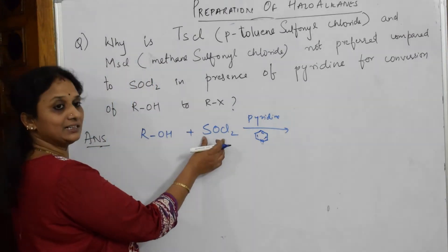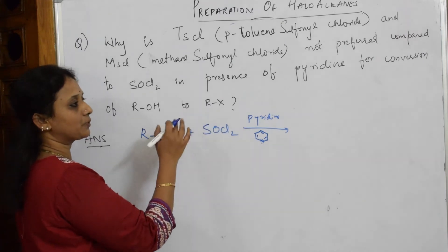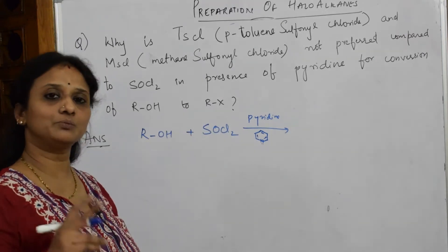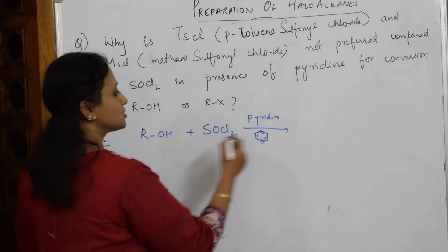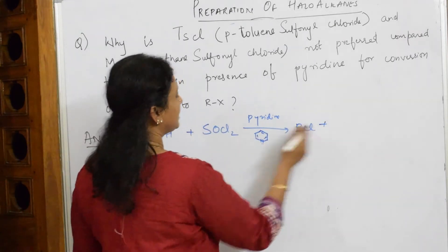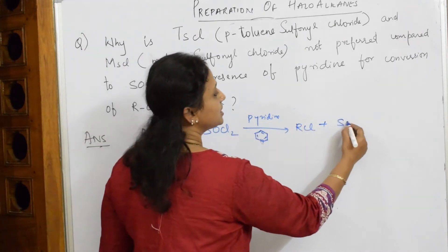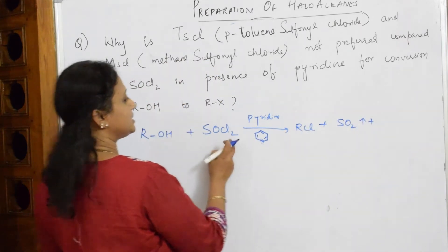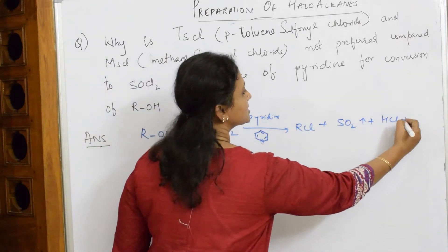Now, we already know whenever thionyl chloride is used, the byproducts which are obtained, both are gaseous in nature. So we get RCl, then we get gaseous products that is SO2 vapor and HCl also as vapor. This is done.